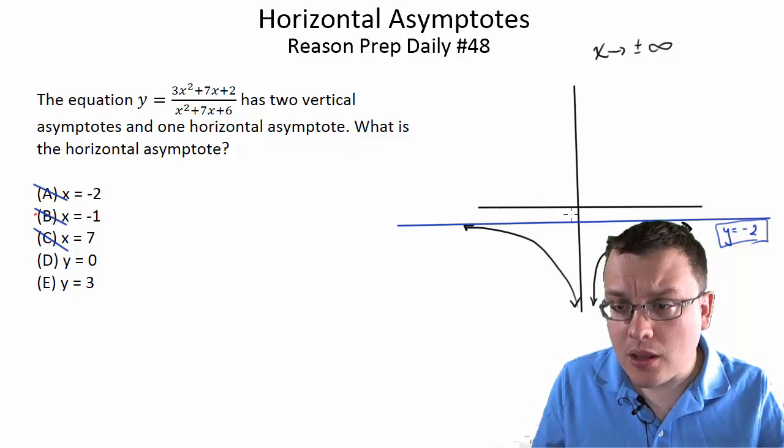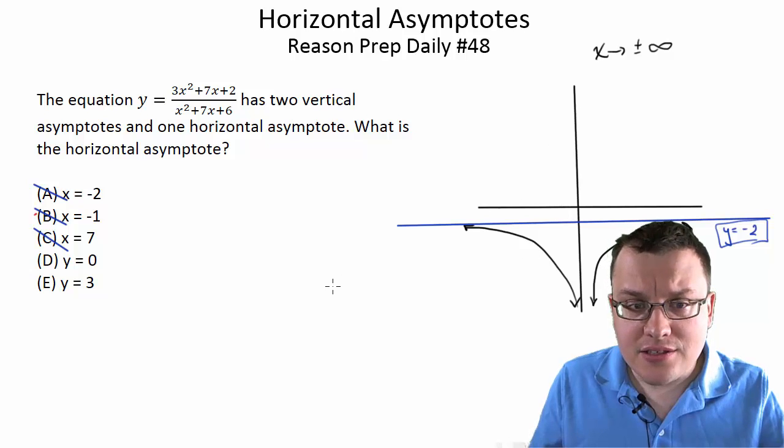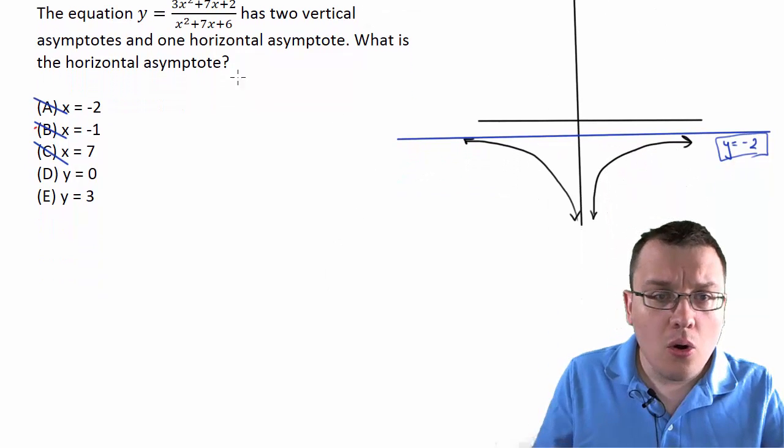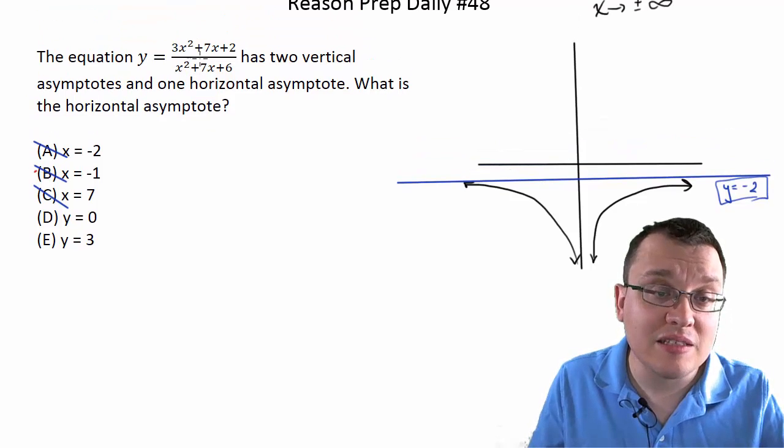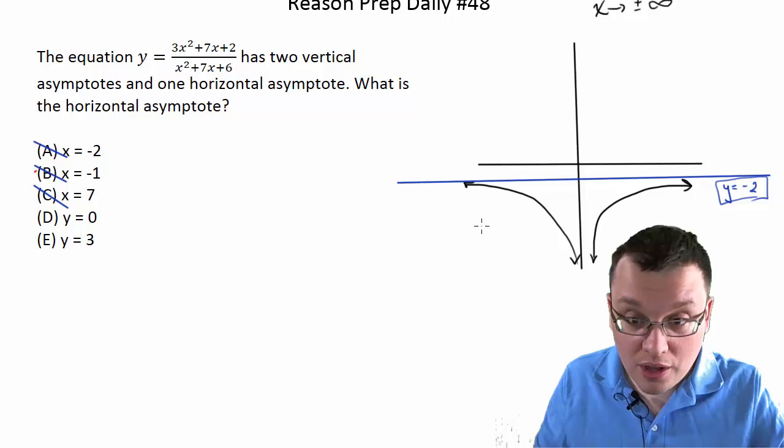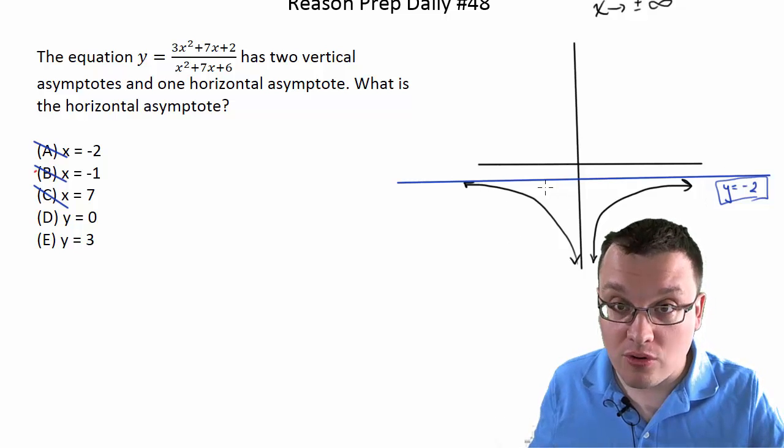Now the question would be, given this, how can we find the horizontal asymptote for this particular equation? Now you could take this and put it in your graphing calculator and see what the graph looks like and try to find what that horizontal line would be.